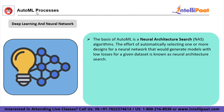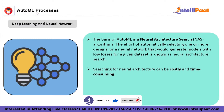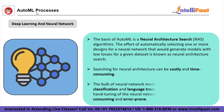The effort of automatically selecting one or more designs for a neural network that would generate models with low losses for a given dataset is known as neural architectural search. Searching for a neural architecture can be costly and time consuming — think how much time it takes to tune a model as a machine learning expert. GPU days, often thousands of GPU days, are widely used as a search and training time metric. Hence, neural architecture search must be improved. Most neural network model breakthroughs, such as image classification and language translation, have required substantial hand-tuning of the neural network design, which is time-consuming and error-prone.